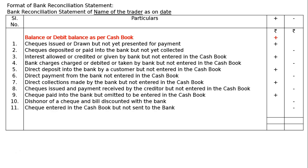Once all postings are complete, we add up the larger side. If the plus side is bigger, we write that total in the minus side as well to find the difference. The balancing figure is the balance or credit balance as per pass book — if it falls in the minus column it is a credit balance, and if it falls in the plus column it is an overdraft or debit balance as per pass book.